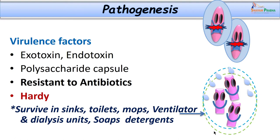Let us look into pathogenesis. Organisms like Pseudomonas and Acinetobacter can produce exotoxins or have lipopolysaccharide endotoxin responsible for causing endotoxic shock or septicemia — the ultimate result in hospital acquired infections. The polysaccharide capsule in Pseudomonas is important as it prevents entry of drugs into the organism, which is one of its drug resistance mechanisms. These organisms are very hardy and may be found in sinks, toilets, mops, floors, ventilator units, dialysis units, soaps, detergents, and antiseptics — which is why some antiseptics have even been explored for developing selective media for Pseudomonas.